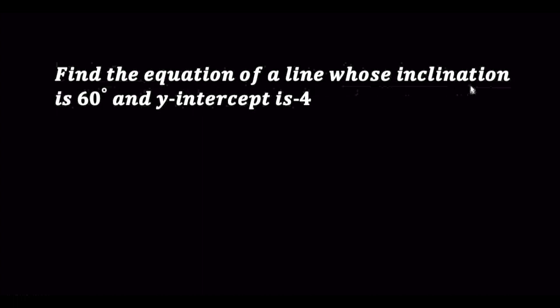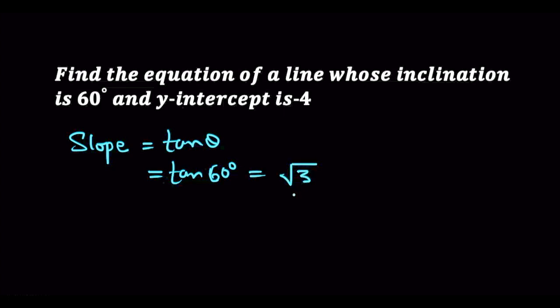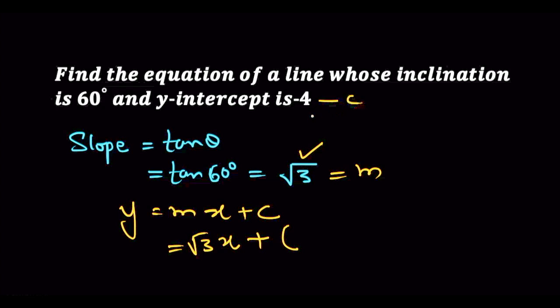Next question: Find the equation of a line whose inclination is 60 degrees and y-intercept is minus 4. Angle of inclination is 60 degrees, so slope equals tan 60 degrees, which is root 3. When y-intercept is given, the equation is y equal to mx plus c. So m is root 3, giving y equal to root 3x plus c, where c is minus 4. The equation is y equal to root 3x minus 4.